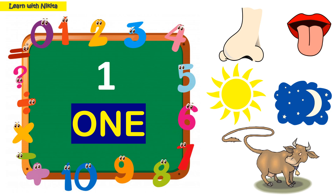This is number 1 and its number name is ONE. Let's see examples related to this: one nose, one tongue, one sun, one moon, and one tail.